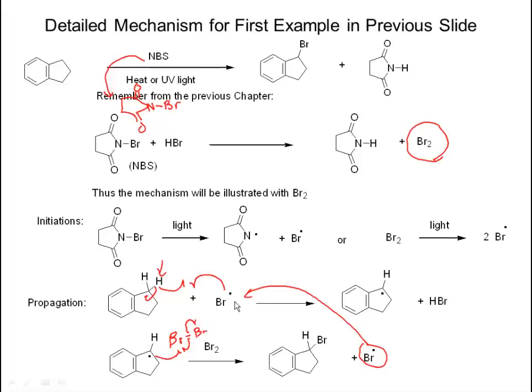The reaction ends with termination steps — just combine every radical that was made. They're not the most important steps for the product. In any mechanism, I would probably only ask you to come up with the initiation and propagation steps.